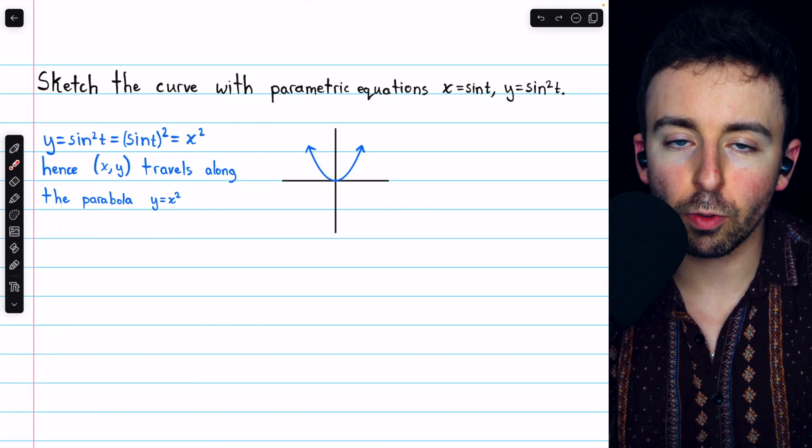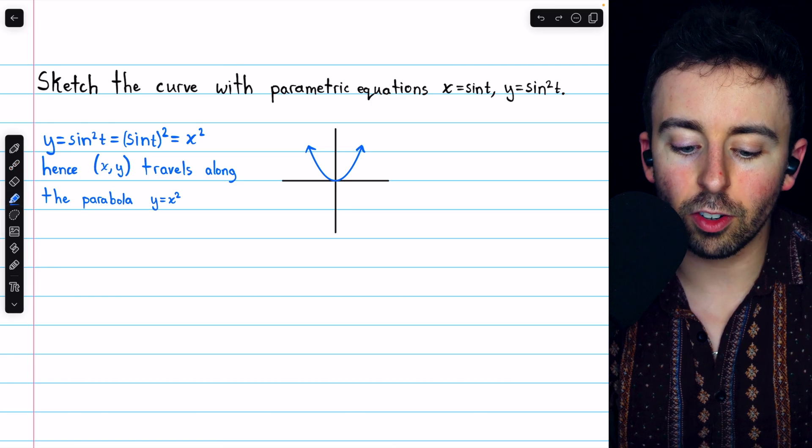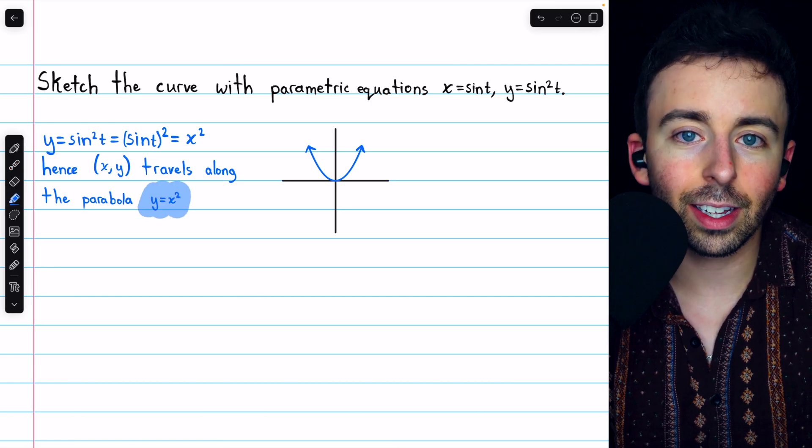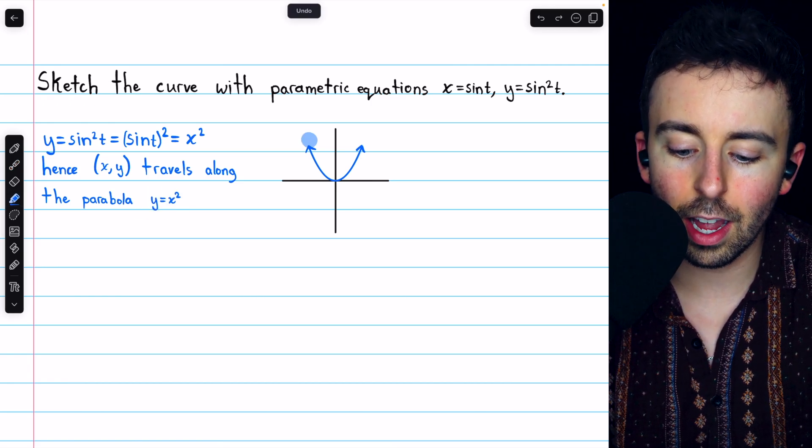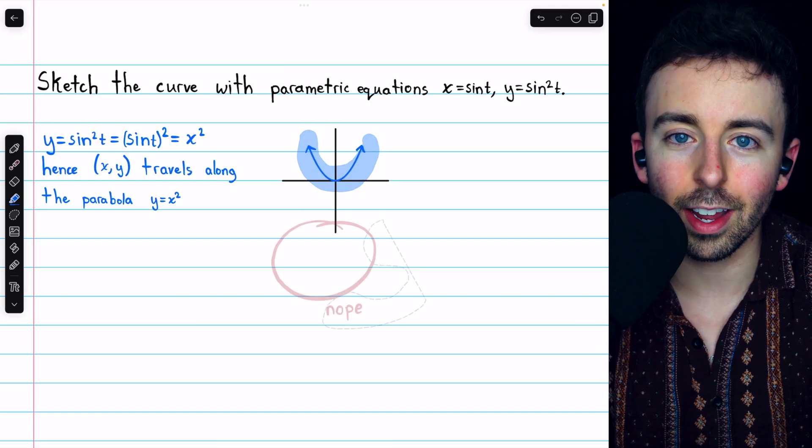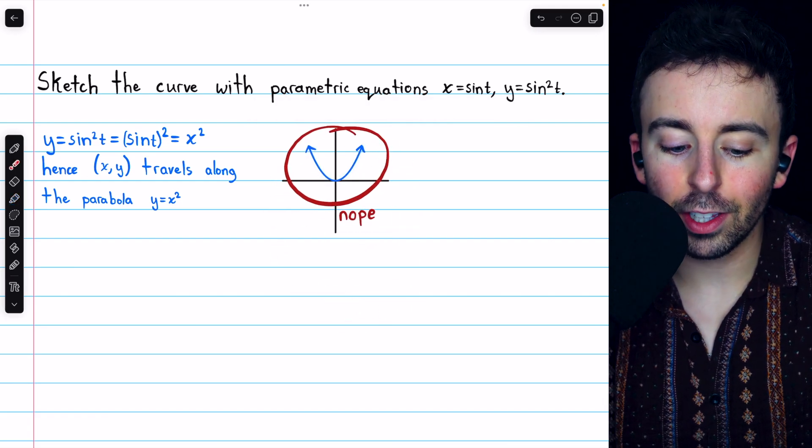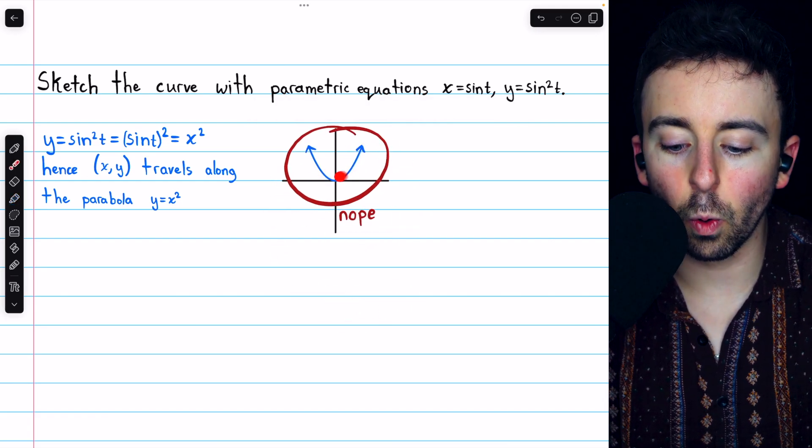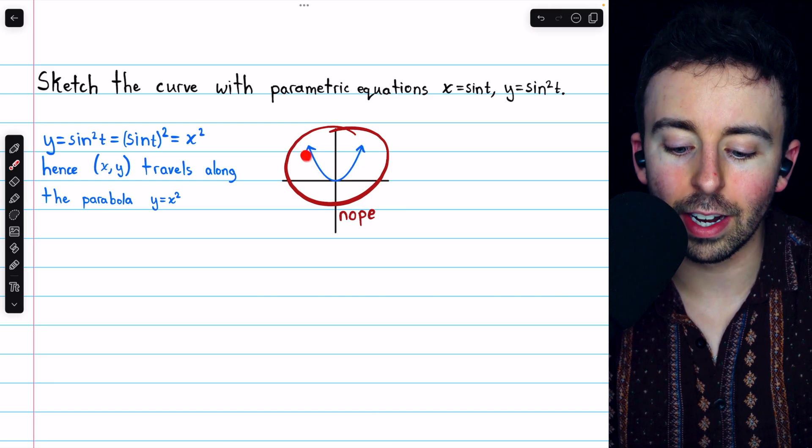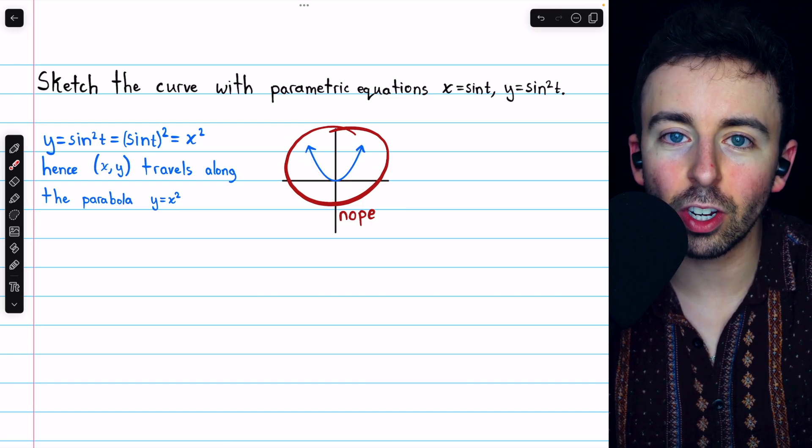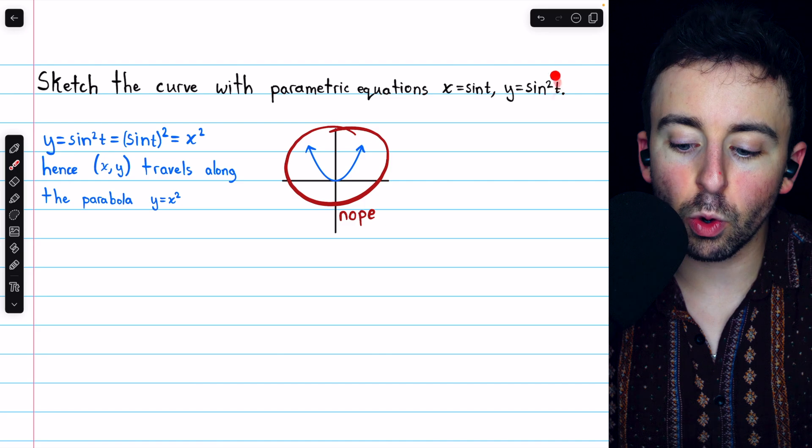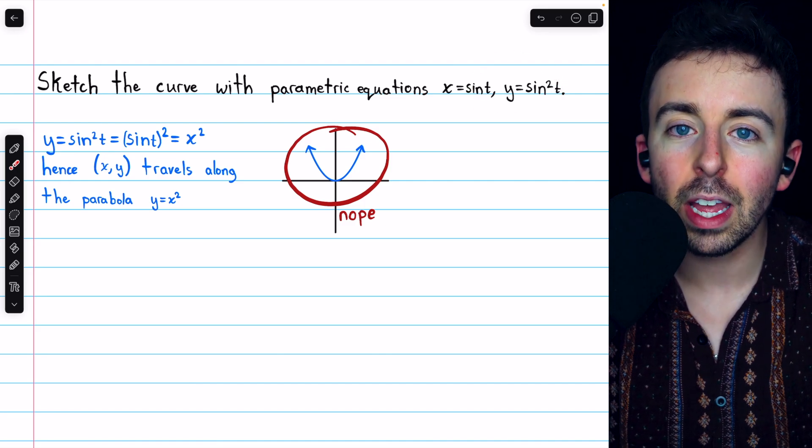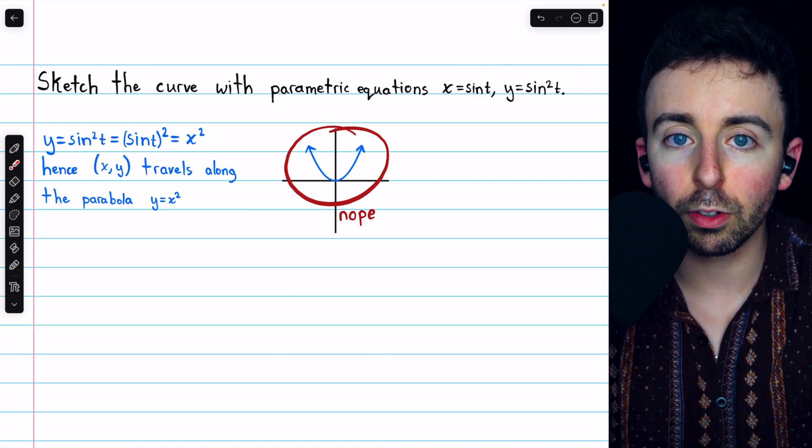We're asked to sketch the parametric curve, so you may be tempted to just say, well, y equals x squared, that's a parabola we've graphed a thousand times, and there it is, we're done. But that would be wrong. You can't just suggest that this is an ordinary parabola going on infinitely in either direction. Based on the parametric equations defining this curve, there are some unusual restrictions.